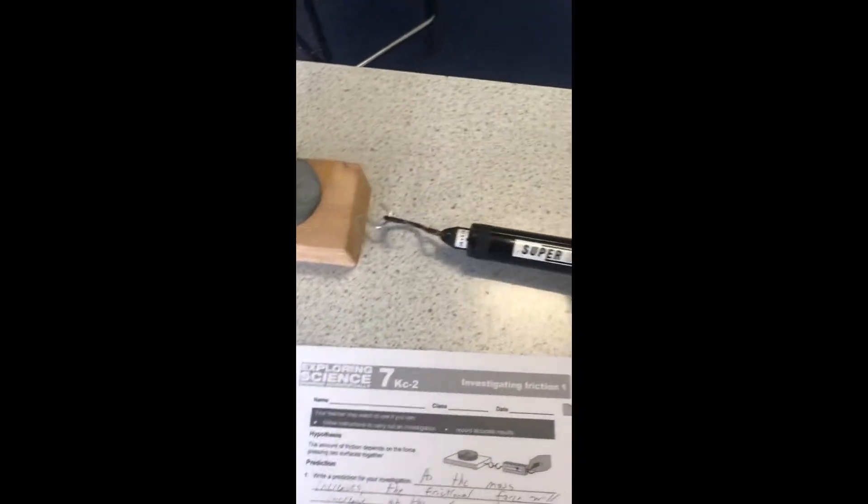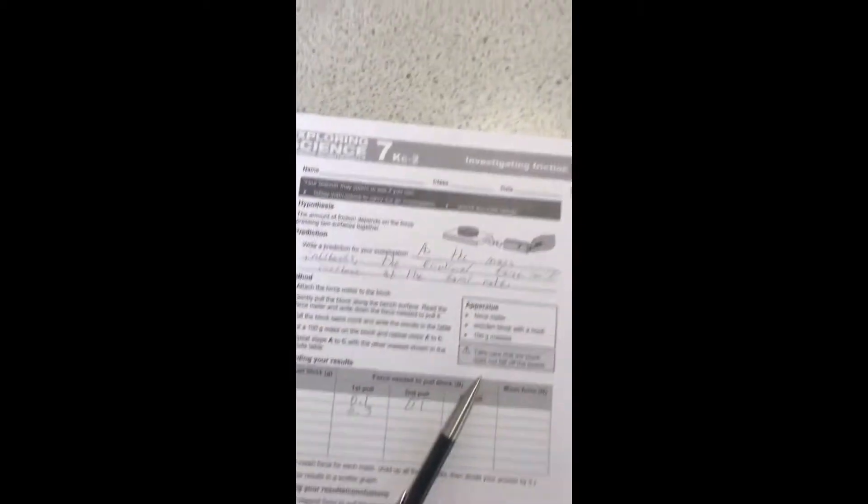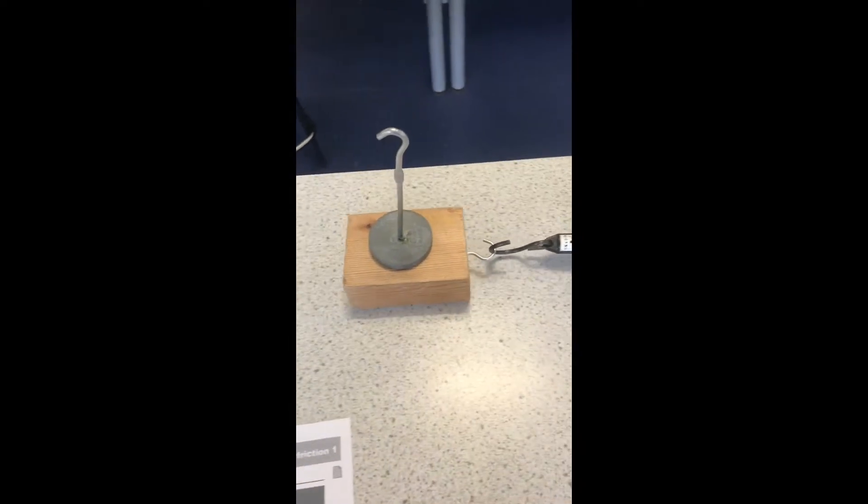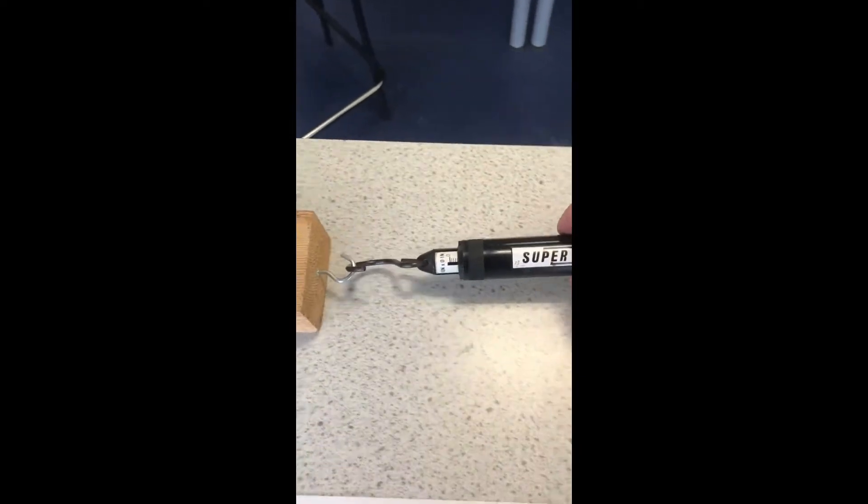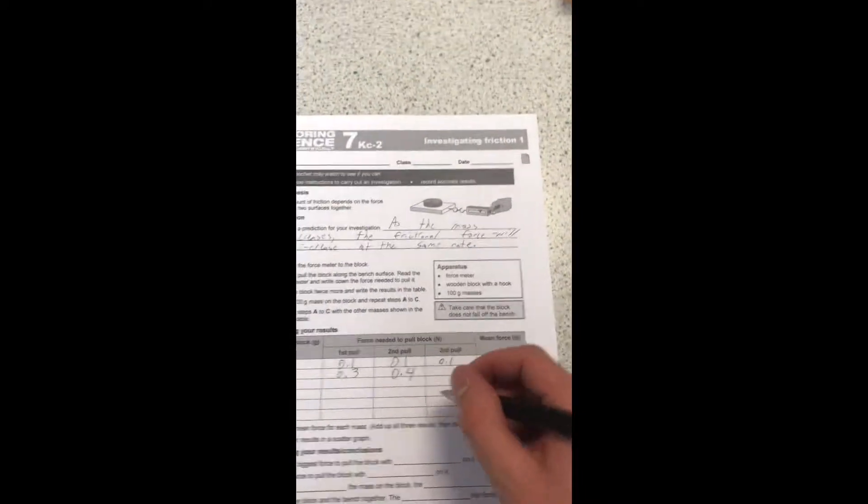We will now add 100 grams of mass to our wooden block. As you can see when I pull the wooden block with 100 grams on it the force is now 0.3 Newtons. I will now try this again. This time the force was 0.4 Newtons. And one more time. The force is once again 0.4 Newtons.